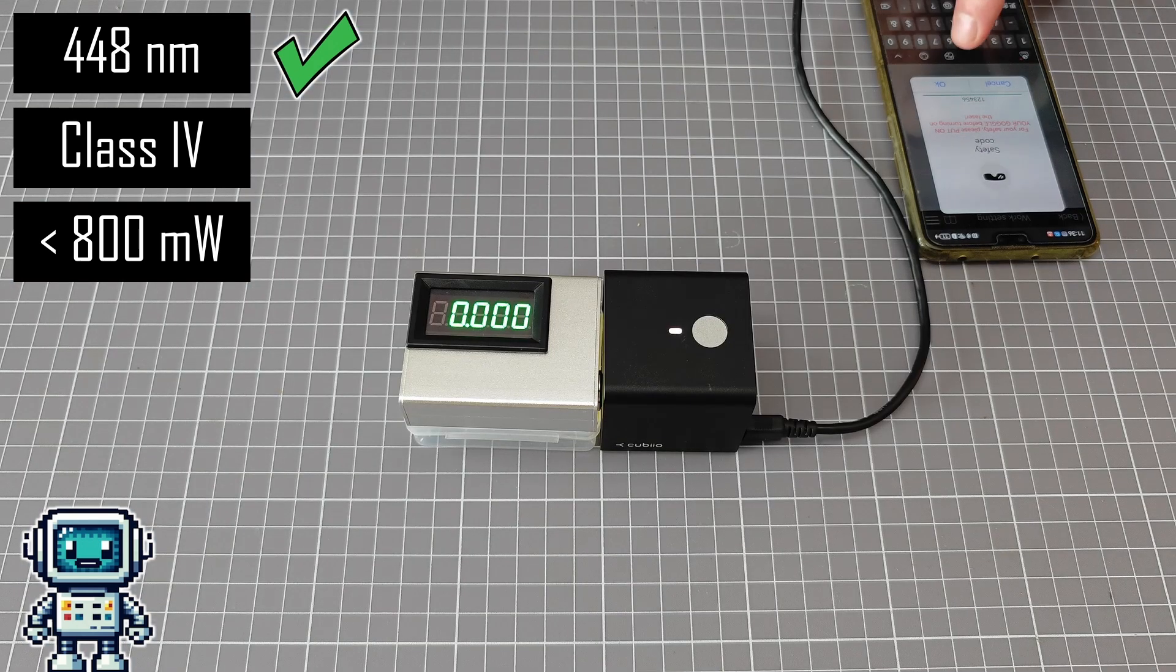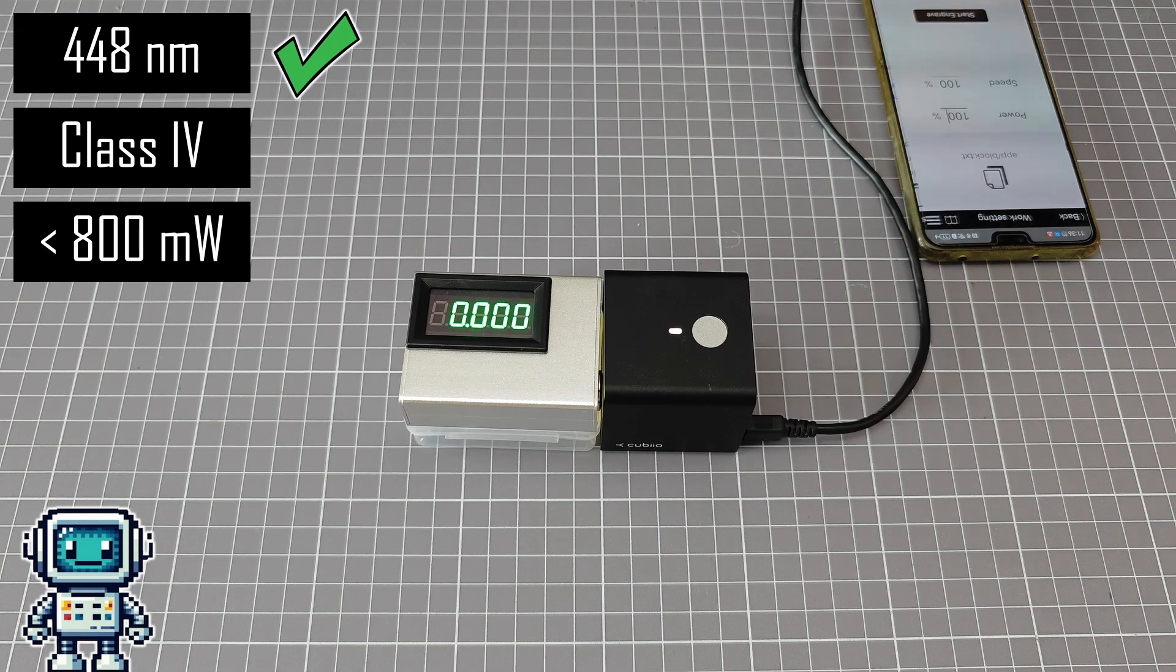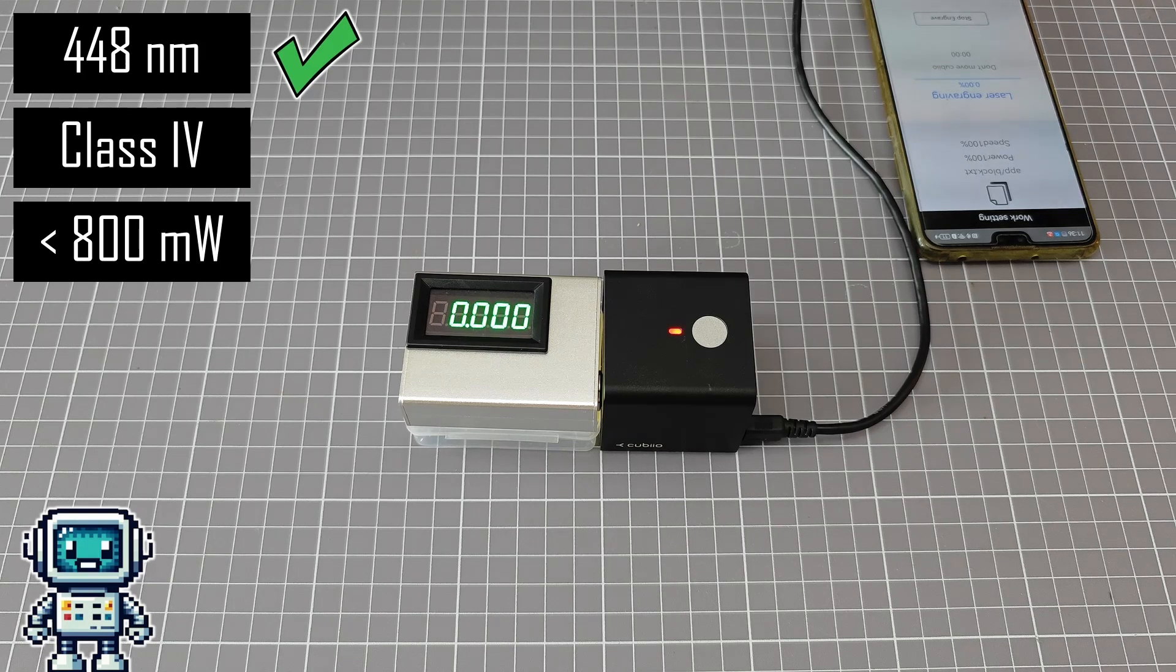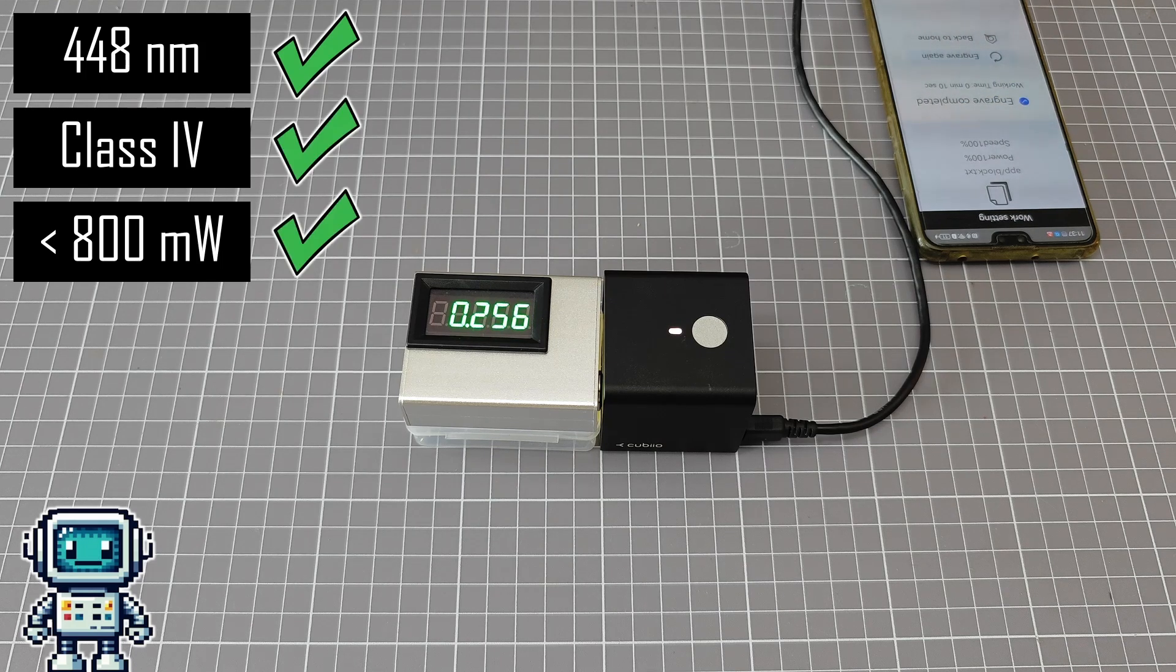So now we just need to measure the laser power. Unfortunately, this is not so easy to do. This engraver does not have a mode of operation that keeps the beam in a static location. Here, the beam's strength is set for maximum, and we do not see a reading that exceeds 600 milliwatts.